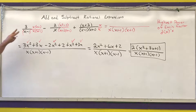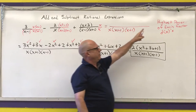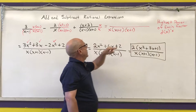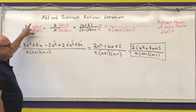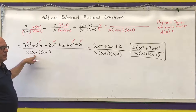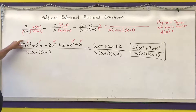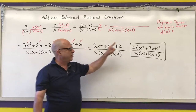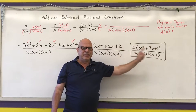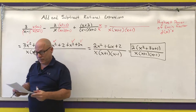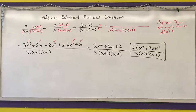To summarize the steps: factor the denominators; write the highest power of each factor in the denominators as your LCD; multiply by what's missing; leave the denominator in factored form; combine like terms in the numerator; factor the numerator; see if anything cancels; and write your final answer. I'll do two more examples.